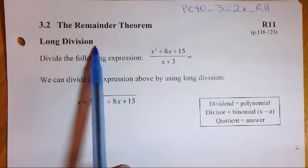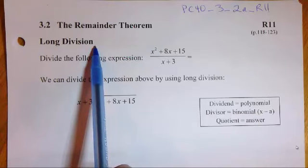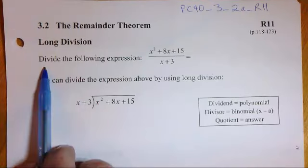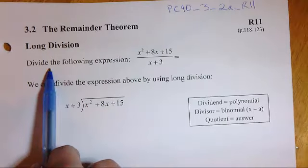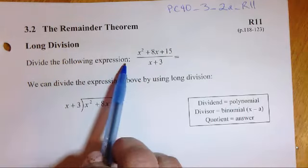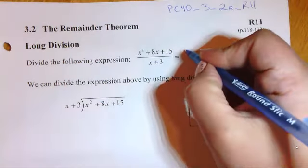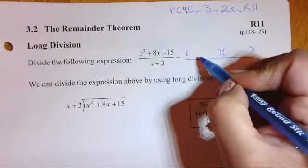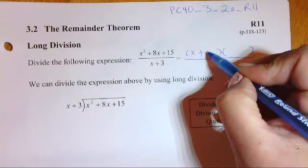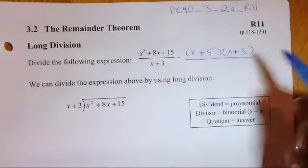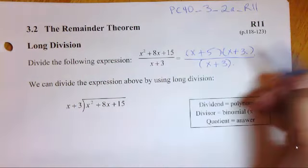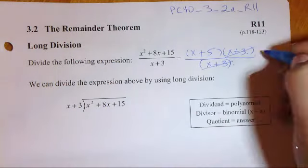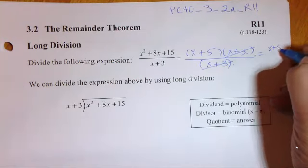We're going to talk about the remainder theorem as a whole of what's the point of the outcome. But first, I'm going to take you through long division and remind you how to do long division using polynomials. First, if we can take a little trip back to grade 11 and look at this question here. It says divide the following expression. So the way we'd approach this last year would be to factor the numerator, which would end up being x plus 5 and x plus 3. The denominator is already factored, and we would just simply reduce these common factors that are here. And that would simplify to x plus 5.